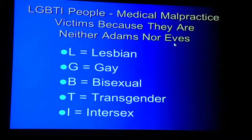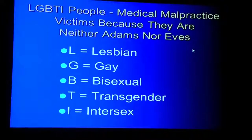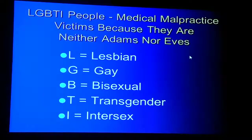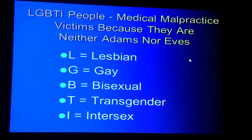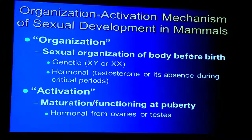I contend that lesbian, gay, bisexual, transgender, and intersex people have been and continue to be victims of medical malpractice, purely because they are neither Adams nor Eves. I'm going to summarize what scientists have learned about sexual development, especially in the brain, over the last 50-plus years, and then tell you what the medical community has been doing and what they're still doing.